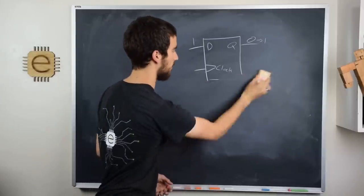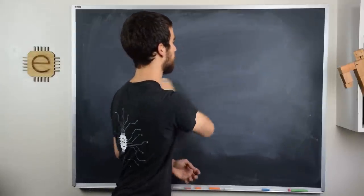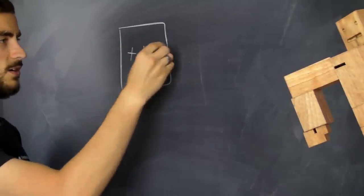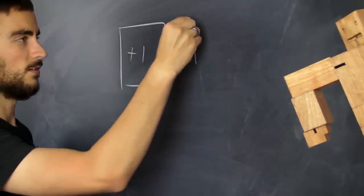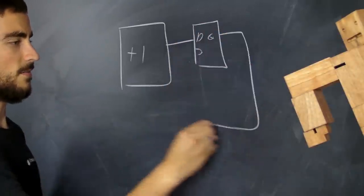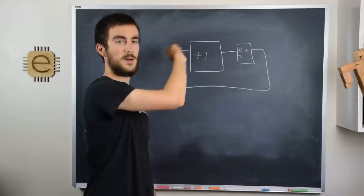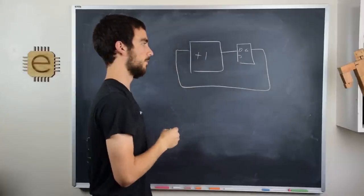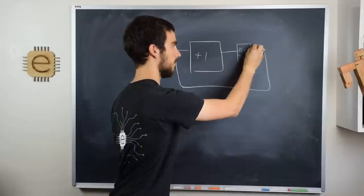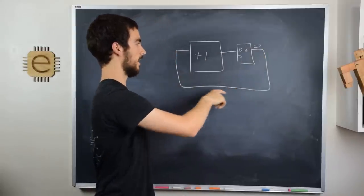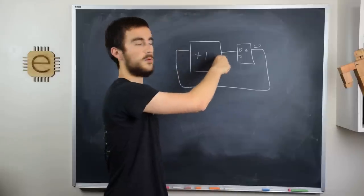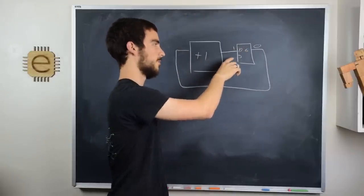So if we take that back to our counter example, and we take the plus 1 circuit, and then feed its output into the flip-flop, and then put the flip-flop in the feedback loop, then this circuit will actually be well behaved. So just for a second, assume that the output of the flip-flop is 0. That means that the input of the addition circuit will be 0, which means the output will be 1, which means the input of the flip-flop will be 1.